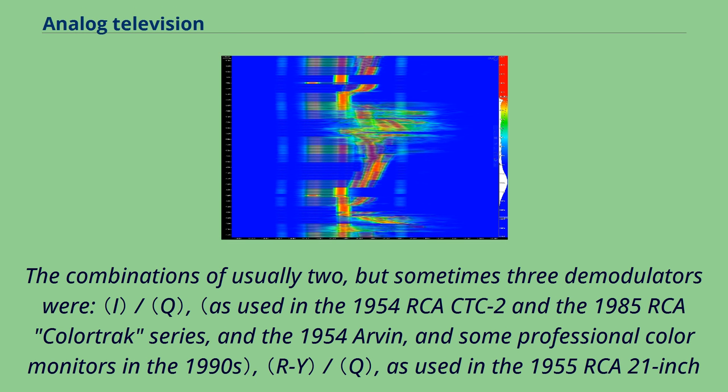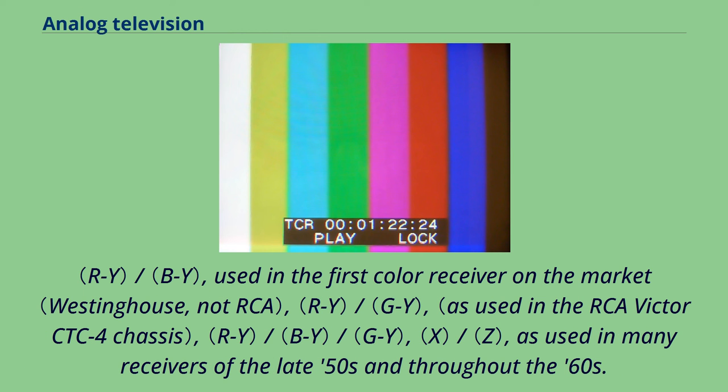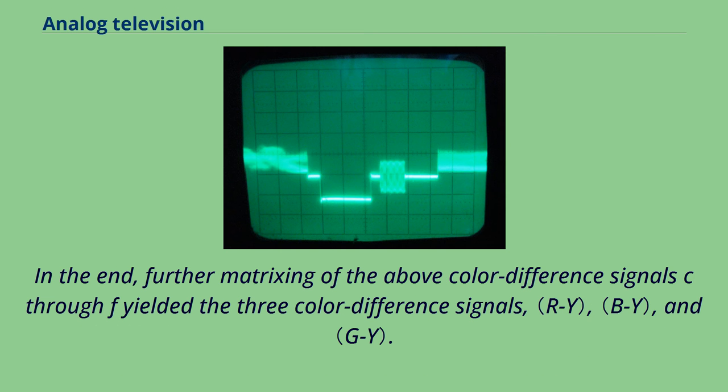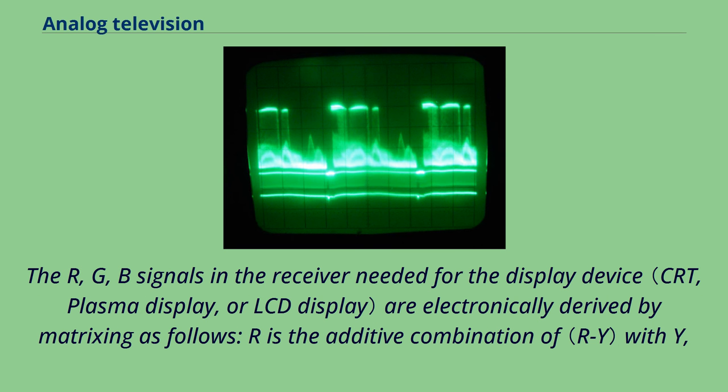Further matrixing of the above color difference signals yielded the three color difference signals, and the R, G, B signals in the receiver needed for the display device are electronically derived by matrixing: R is the additive combination of (R-Y) with Y, G is the additive combination of (G-Y) with Y, and B is the additive combination of (B-Y) with Y. All of this is accomplished electronically.